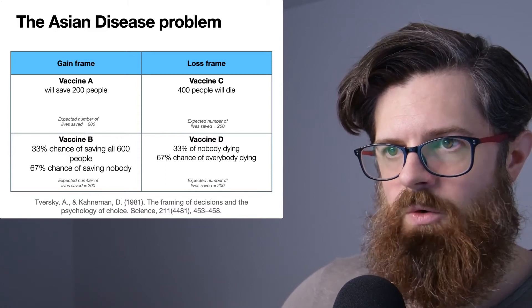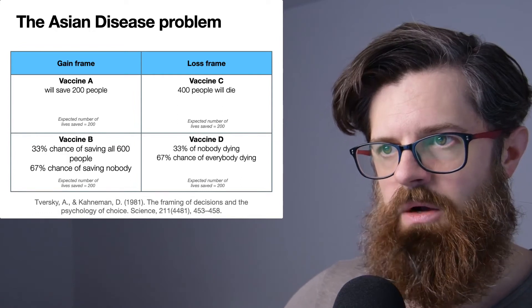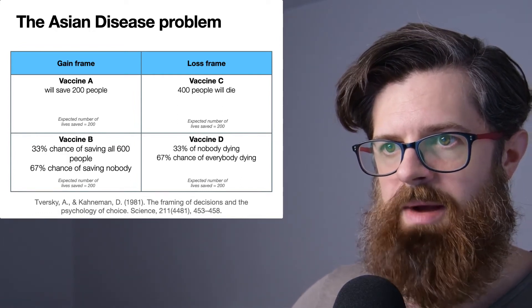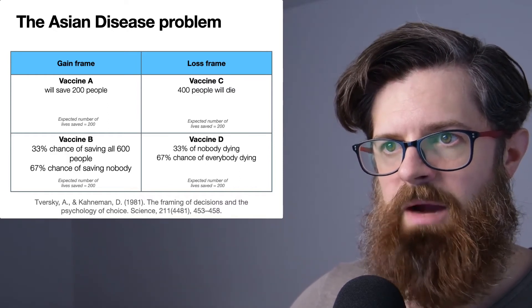What is changing clearly is either the level of risk or certainty of each option, and also the framing. On the left with the gain framing, we can see that we're talking about saving people. On the right in the loss frame, we're talking about how many people will die.